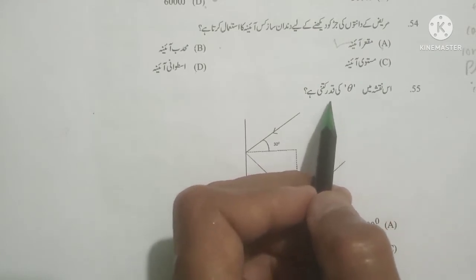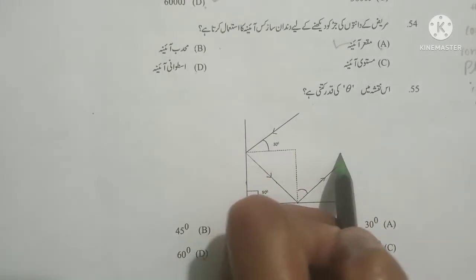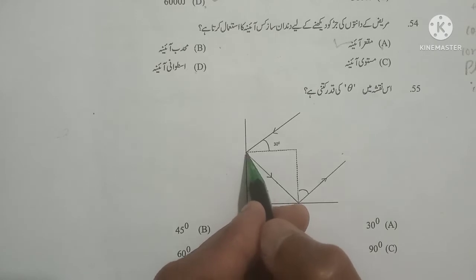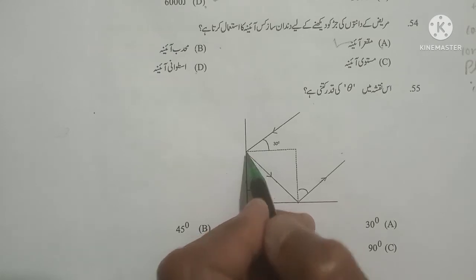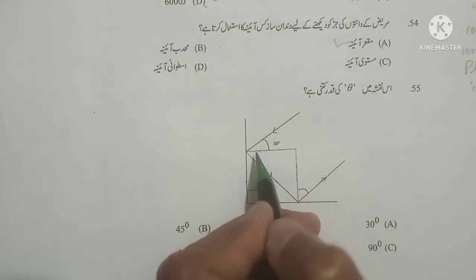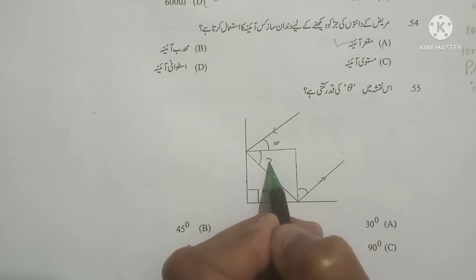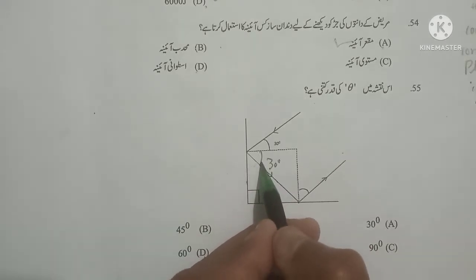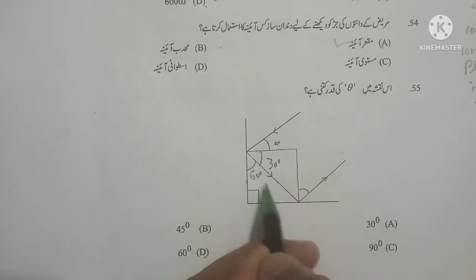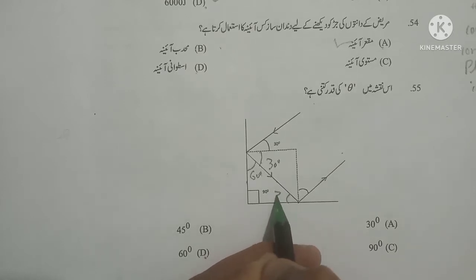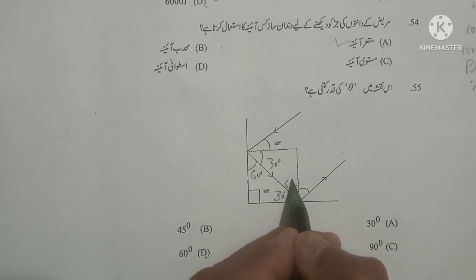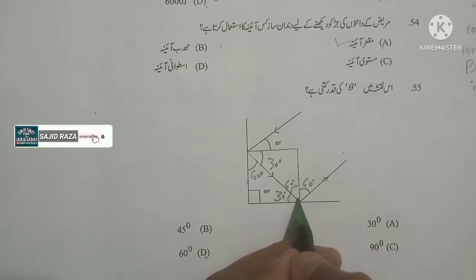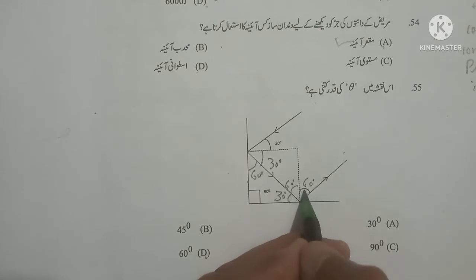Next question: Is naqshe mein theta ki qadr kitni hai? What is the value of theta in this figure? Here you can see the reflection of light on a plane mirror. As you know from the laws of reflection, the angle of incidence equals the angle of reflection, so this angle equals 30 degrees. Total angle is 90 degrees; since one angle is 30, the other is 60. The normal makes 90 degrees with the mirror — incident angle equals reflected angle — so the value of theta is 60 degrees.